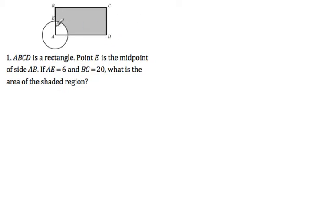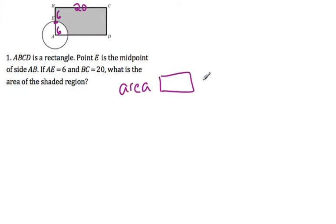ABCD is a rectangle and point E is the midpoint. So if AE is 6, then we know that BE is also 6. And we know BC is 20. The first thing we need to do is find the area of the rectangle. The area equals 20 times 12, which is 240.